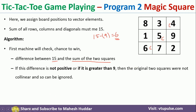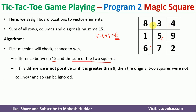Let us take a few more examples. Assume the computer has played at positions 4 and 1. We calculate 15 minus (4 plus 1), which equals 15 minus 5, giving 10. Because 10 is greater than 9, the computer cannot win in this case.